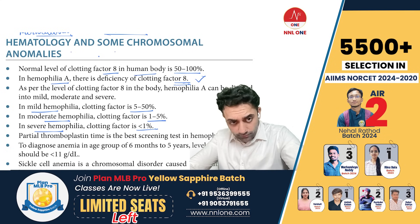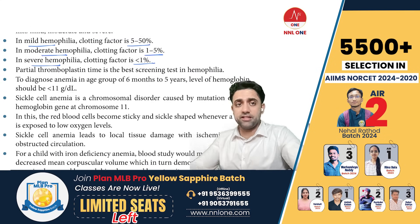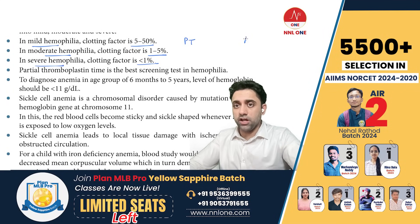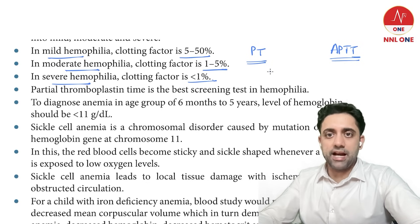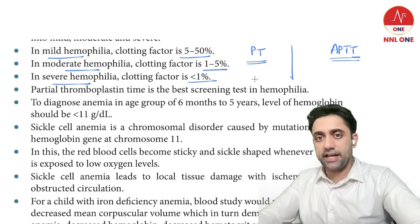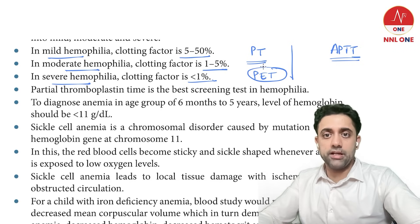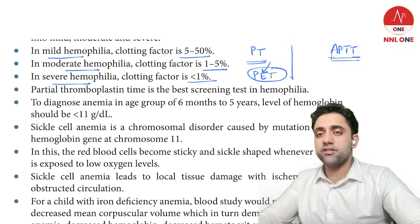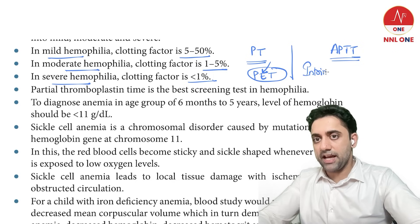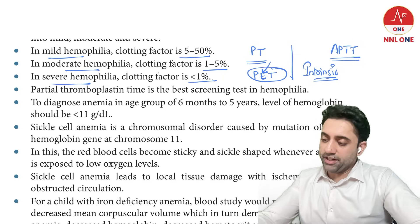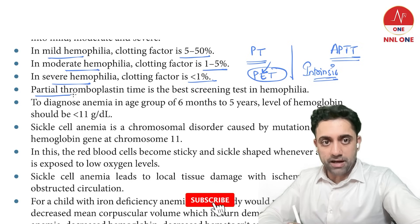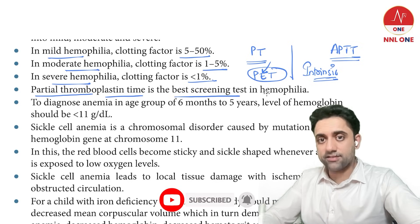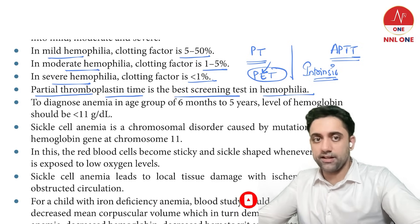Number two: PT and APTT. PT is prothrombin time; APTT is activated partial thromboplastin time. The mnemonic is 'pet mother doggy.' If PT is deranged, there is an extrinsic pathway defect. If APTT is deranged, there is an intrinsic pathway defect. Importantly, APTT is the best screening test in a case of hemophilia.